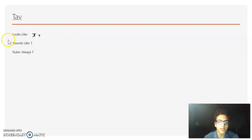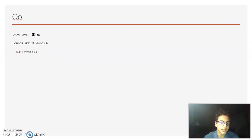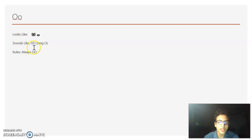Now we have Tav — it looks like a capital T in English, and it always sounds like a T. Then we have O, which looks sort of like that, and it always sounds like O. It always makes a long O sound.